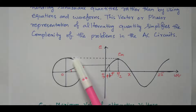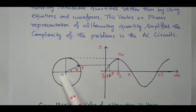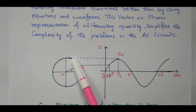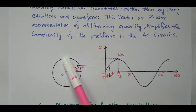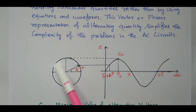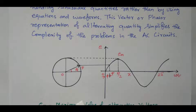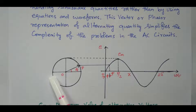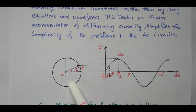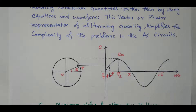So that can be represented as a circle. Initially it is 0, then keeps increasing, then keeps decreasing — this is equivalent to the positive half cycle. Again it increases in the reverse direction, then decreases — this can be treated as the negative half cycle.